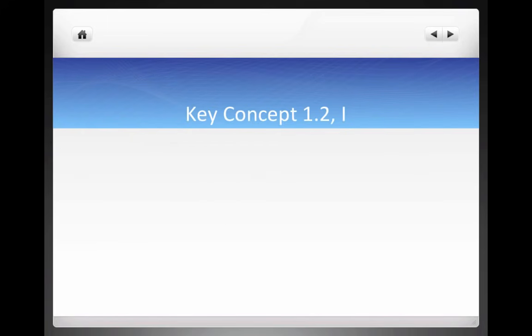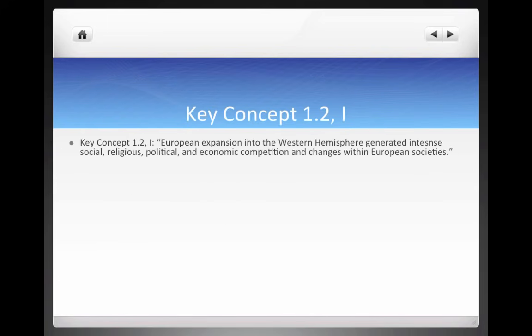Let's take a look at Key Concept 1.2, Roman numeral one. It states: European expansion into the Western Hemisphere generated intense social, religious, political, and economic competition and changes within European societies. That's right from page 26.